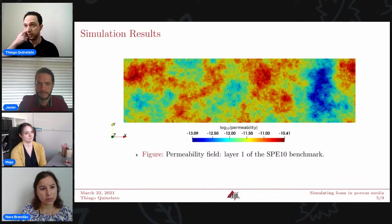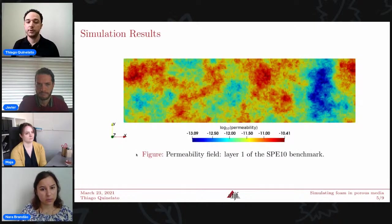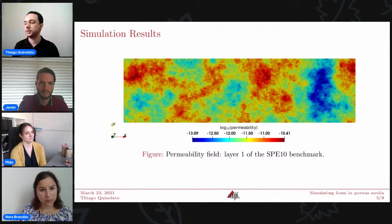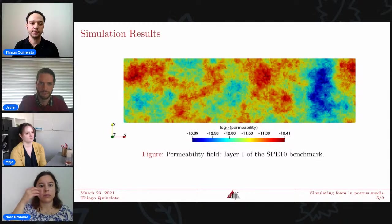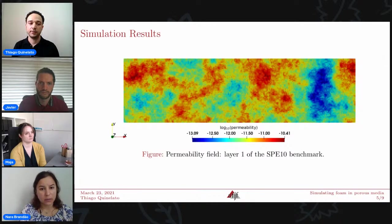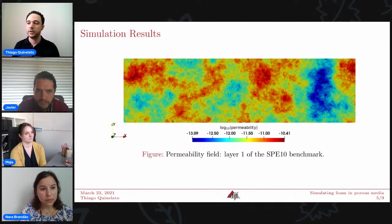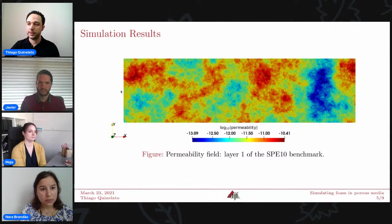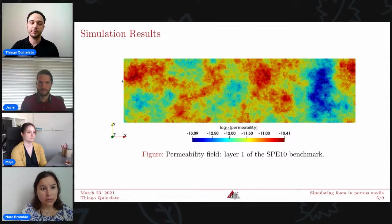Now let me show you some numerical results. We start using the permeability field of layer one of the SPE-10 benchmark, which I show in this figure. And the initial conditions are the porous medium is filled with water. And we are going to inject a mixture of water and gas through the left border of the domain, while the top and bottom borders are closed to fluid displacement, and the right border is open.